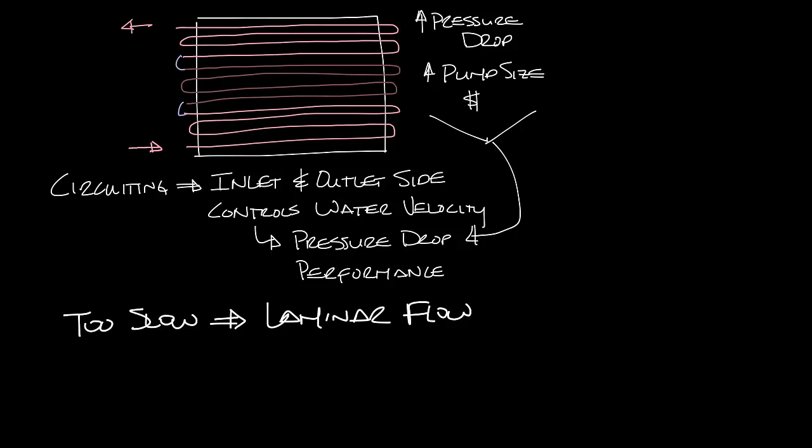This is where all the water is traveling smoothly through the coil and there's no turbulence in the tube. With laminar flow some of the water is traveling in the center of the tube and never touches the tubes to transfer heat, so it reduces your performance.